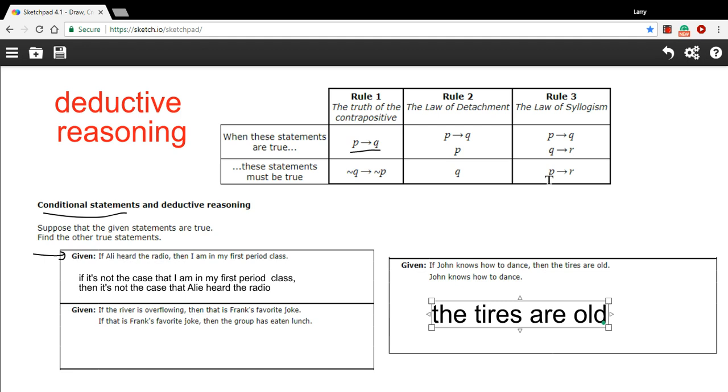Let's look at an example. If the river is overflowing, then that is Frank's favorite joke. We'll assume the river is overflowing, so that is Frank's favorite joke - not sure why that's funny. Then, if that is Frank's favorite joke, then the group has eaten lunch. So if both of these are true, we can go straight from the first hypothesis to the final conclusion.